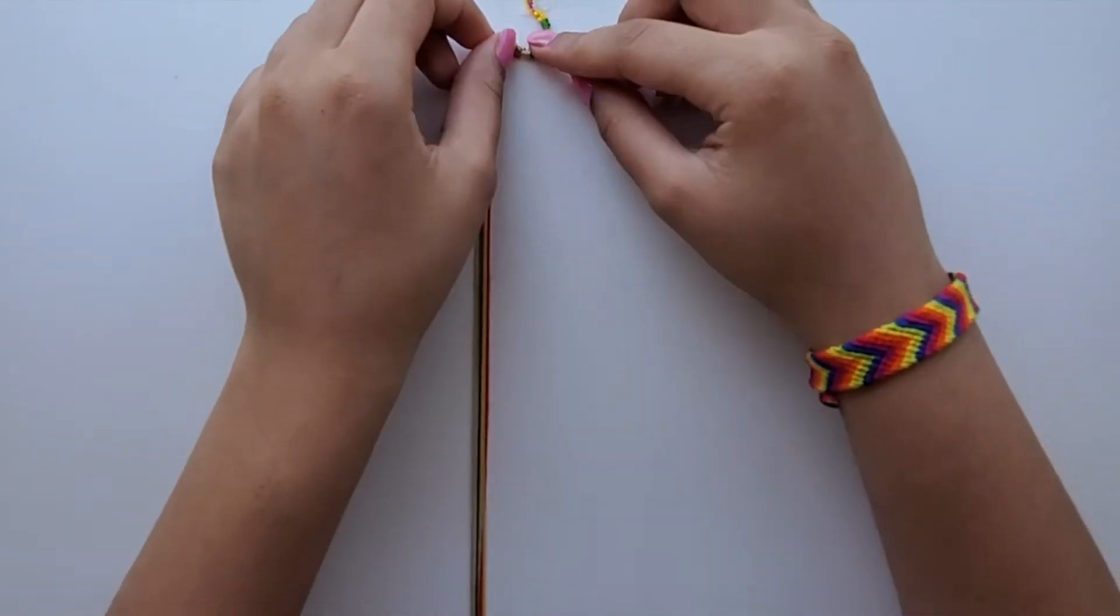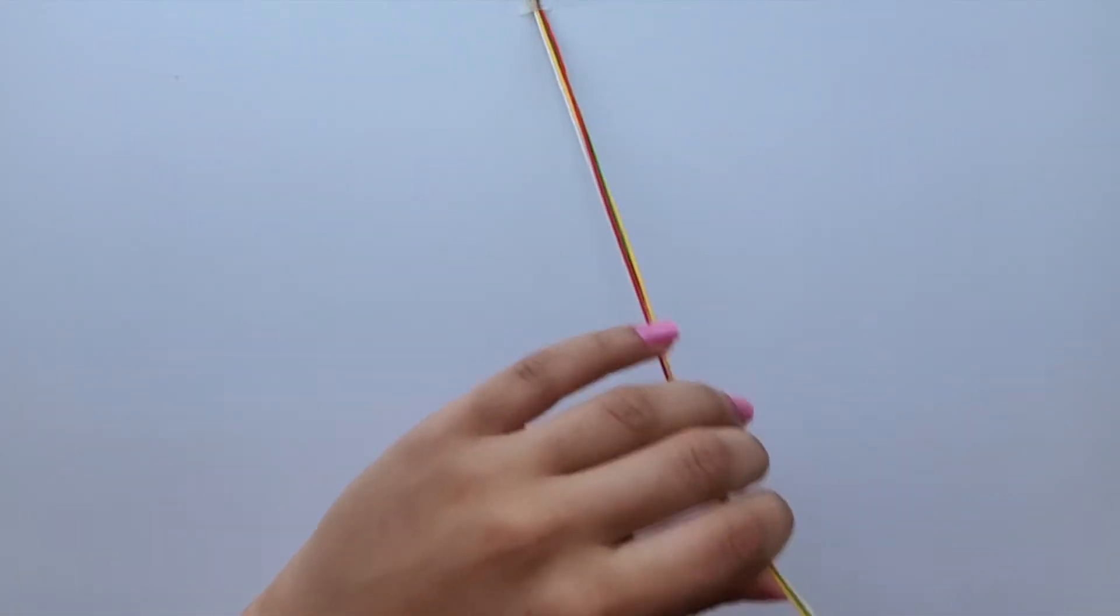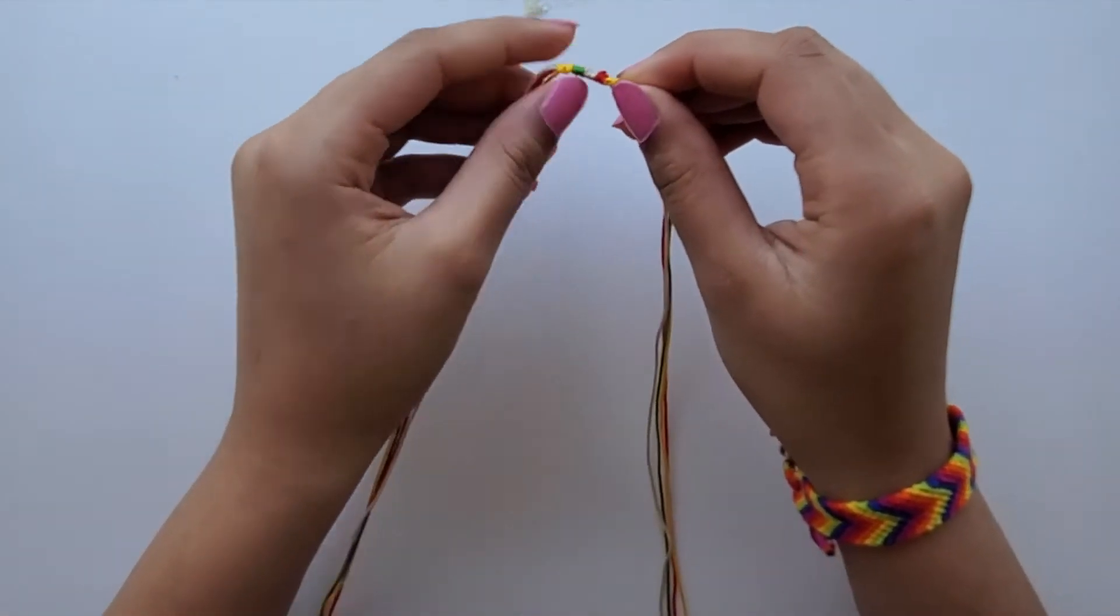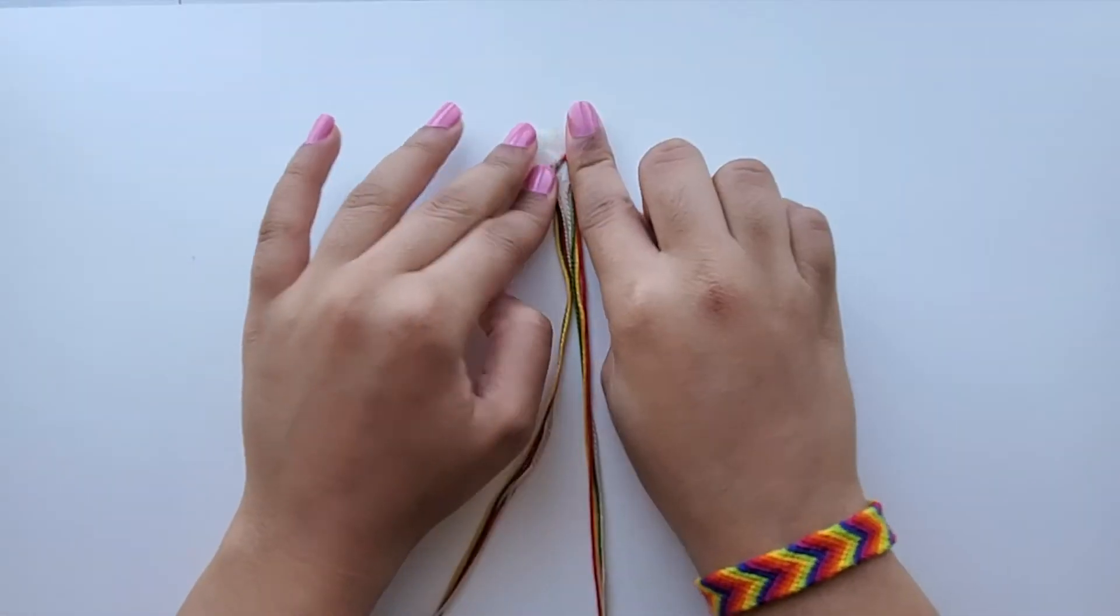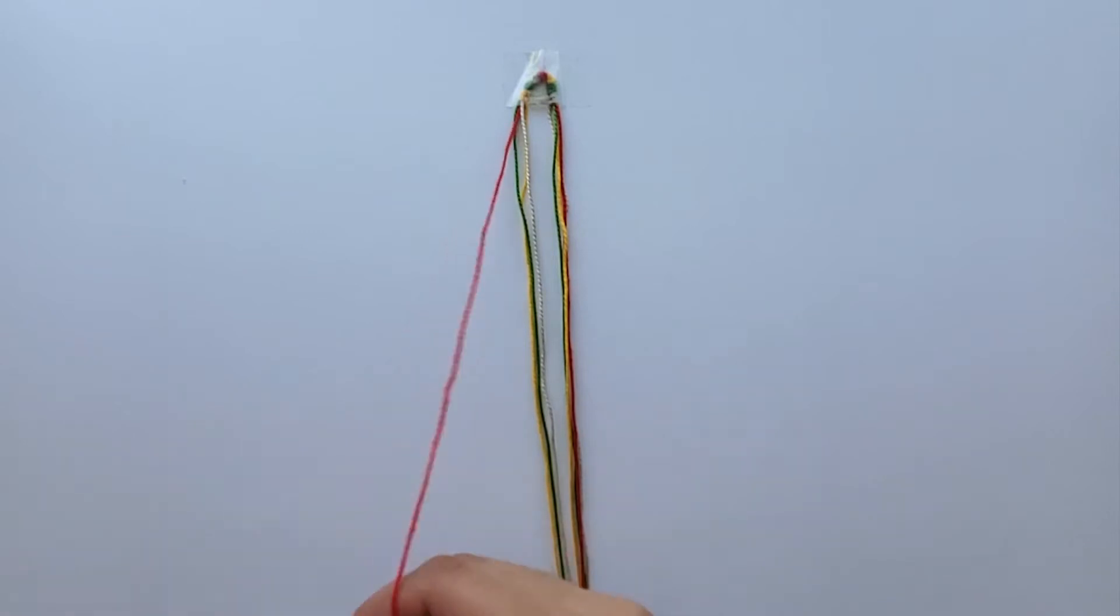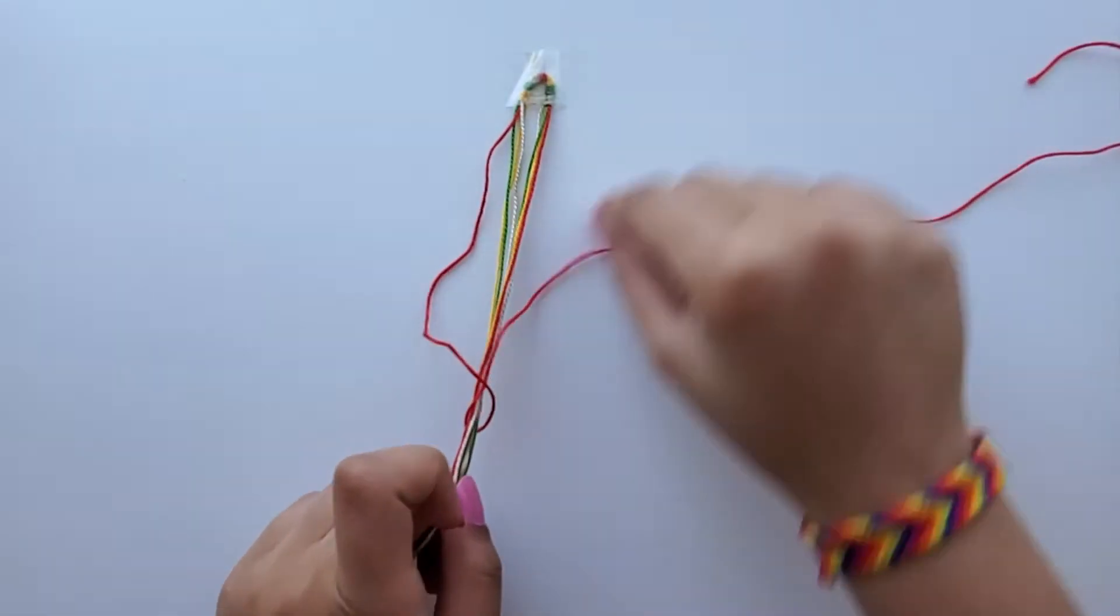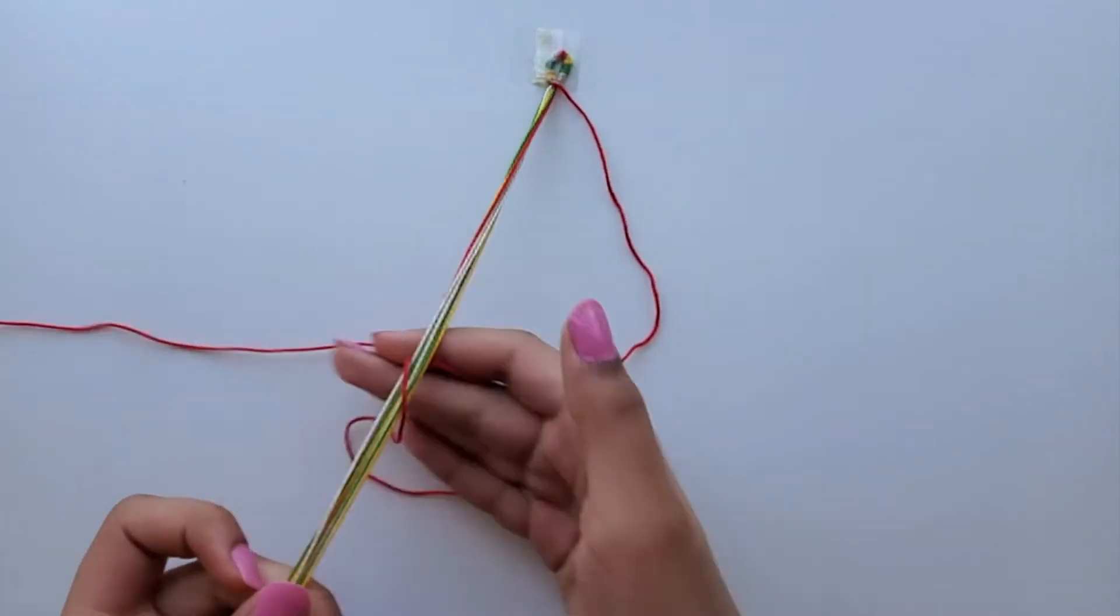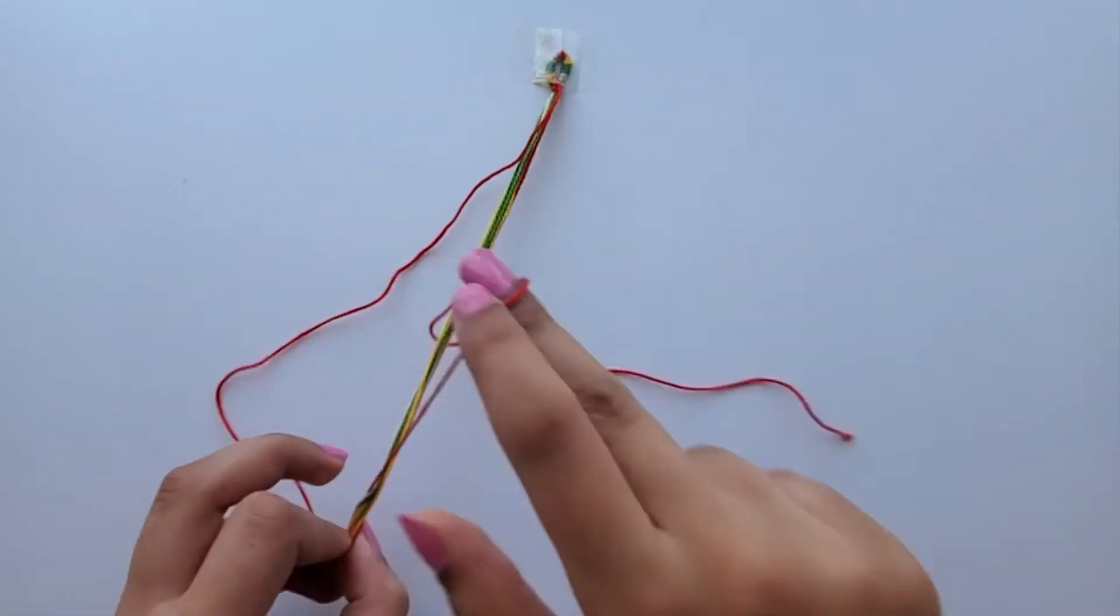Now that my loop is large enough, I'm going to end it off. To end it off, curve your loop over and then tape it down again. Then take your left string and make forward and backward knots again. Make sure that each of your knots are nice and tight to ensure that each knot will stay secure.